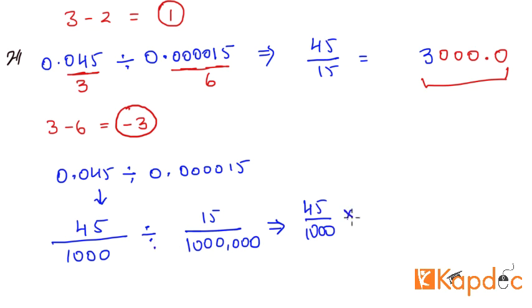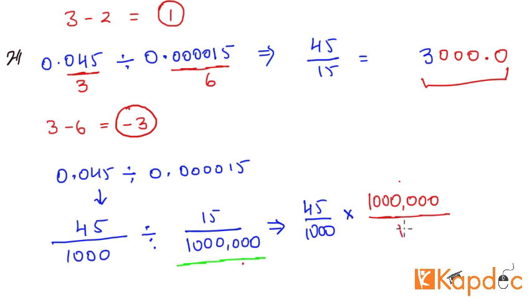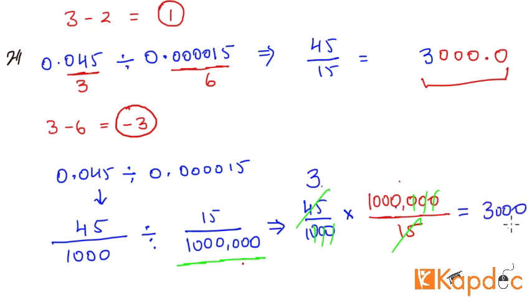The division sign becomes a multiplication sign and the divisor fraction gets inverted. So the new expression is (45/1000) × (1,000,000/15). We carry out the multiplication and cancel common factors: three zeros cancel, and 15 cancels with 45 to give 3. The final answer is 3 times 1000, which equals 3000 — the same answer obtained above.